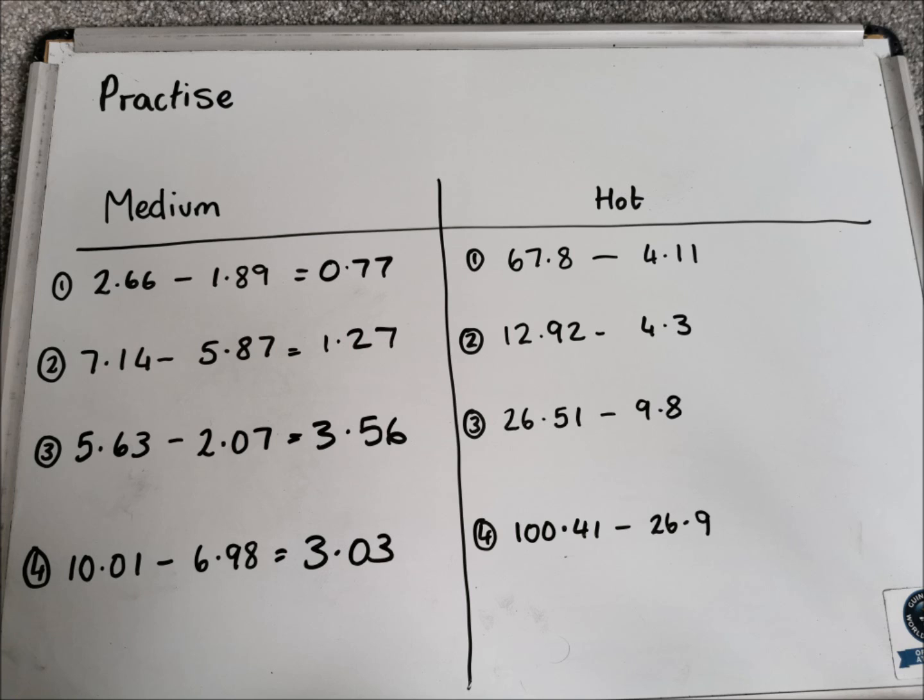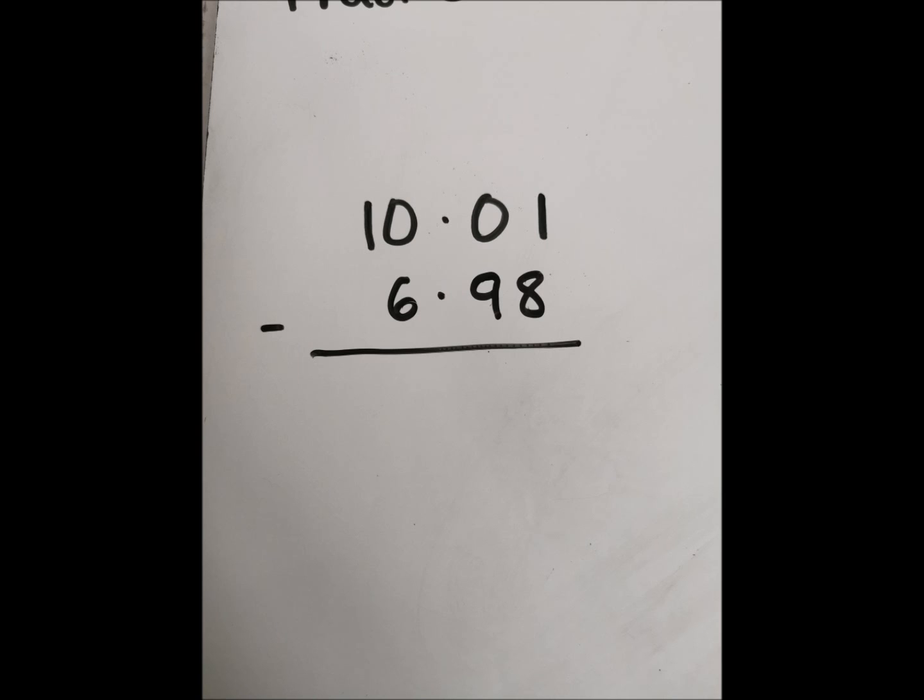Let's have a look at that last one in a bit more detail, as I think it might have caused some confusion. So, we had 10.01 take away 6.98. So, we lay it out as a chimney sum, like this.